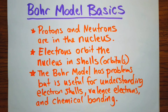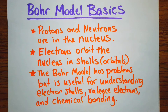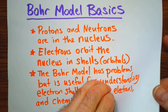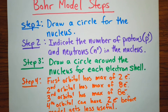The Bohr model does have some problems because we know that electrons behave a little bit more uniquely than just orbiting in circles. But it's really useful for understanding electron shells, valence electrons, chemical bonding, and why ionization happens. So we use them a lot — really good for a lot of high school understanding of chemistry.